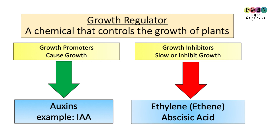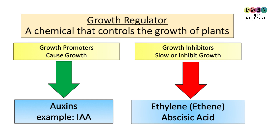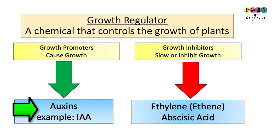Now it's important to discuss growth regulators — those chemicals that control the growth of plants. A growth regulator is defined as a chemical that controls the growth of plants. Growth regulators can be split into two groups: growth promoters, which cause growth — the auxins are a family of growth promoters, and the most common auxin is IAA, indoleacetic acid. Then there are growth inhibitors, which slow or inhibit growth.